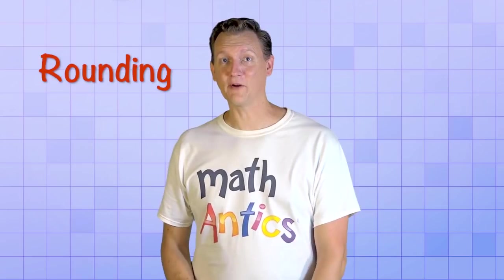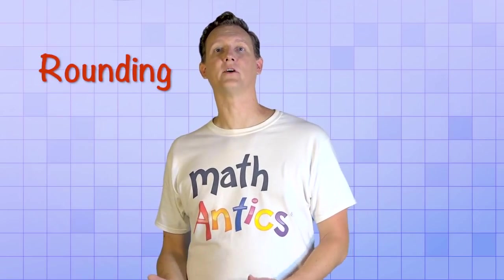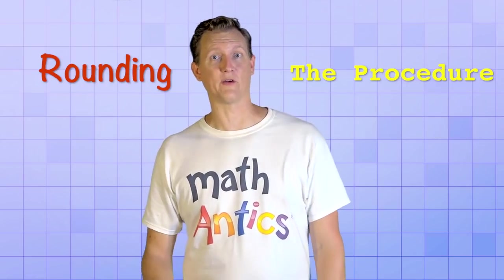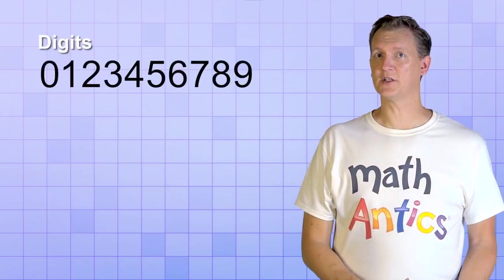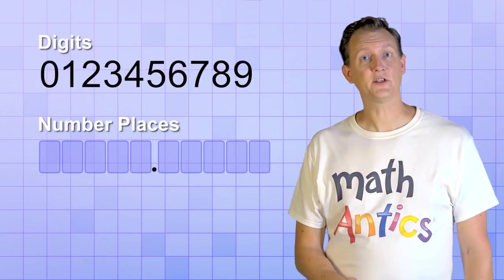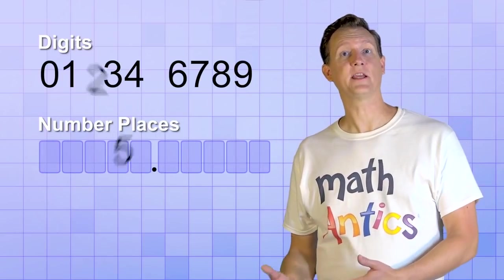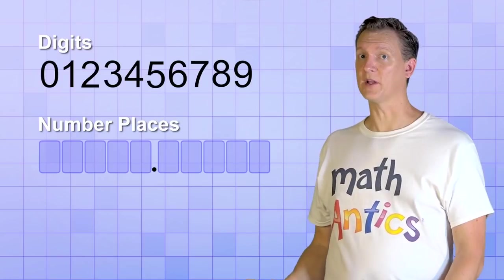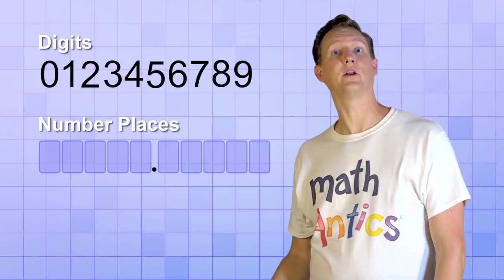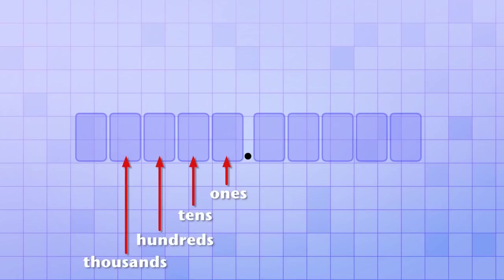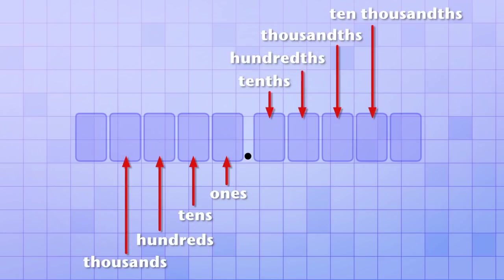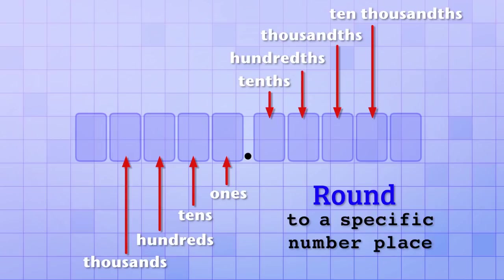Okay, now that you know what rounding is and why we do it, for the rest of this video, we're going to focus on learning the procedure we follow to round off a number. Do you remember how our number system is based on digits and number places? Each digit of a number occupies a particular number place, and each number place is named according to the amount it represents. And it's important to know those names whenever you're rounding a number, because you'll usually be asked to round to a specific number place.